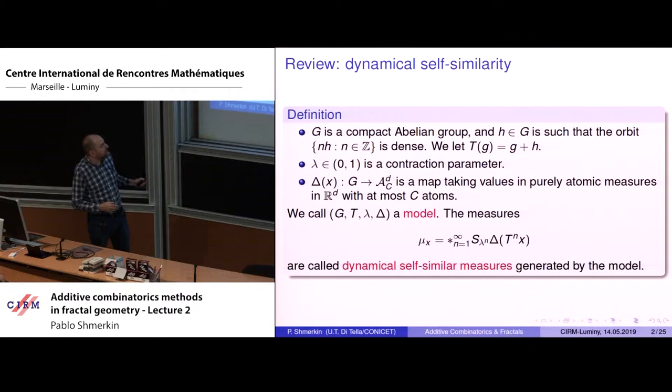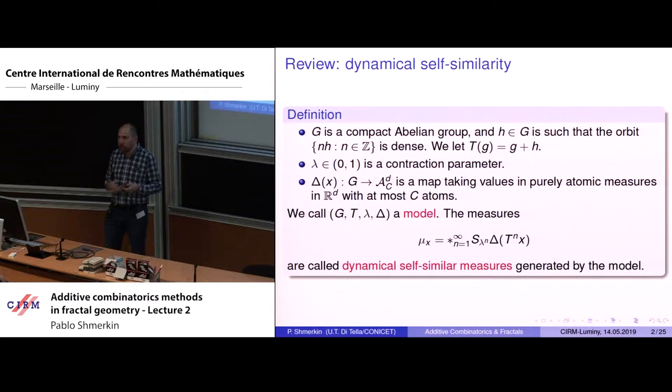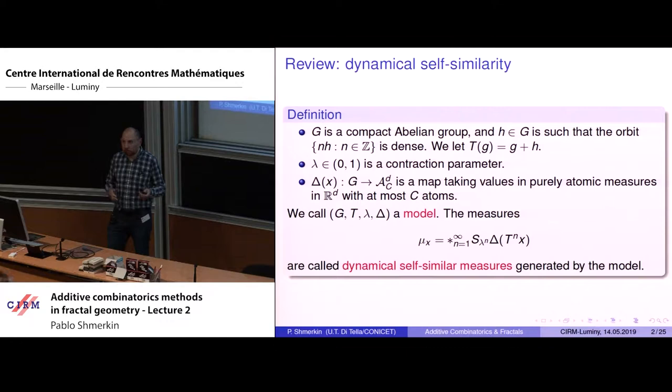These measures are obtained by taking the infinite convolution of atomic measures. This is the atomic measure corresponding to an element of the group — I iterate the dynamics n times and then scale by a factor of lambda to the n. This class of measures includes Bernoulli convolutions and other classical homogeneous self-similar measures, which correspond to the case where the map delta is constant or the group is trivial.